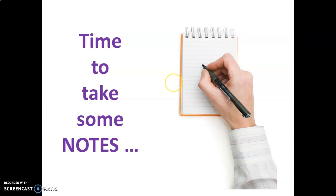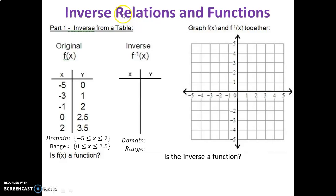Let's take some notes on the notes page provided. Today we're looking at inverse relations and functions. Let's say we begin with an original function that has these coordinates, and a domain and range given. Since the domain and range use greater-than-or-equal-to symbols, there are not just isolated points — all points in between exist as well, meaning they're continuous.